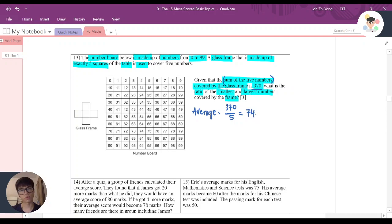Teacher, once I get 74, then what should I do? Now, this is a very key thing that you must know for this question is that this glass frame, and this glass frame, it will cover 5 numbers, right? 1, 2, 3, 4, 5.